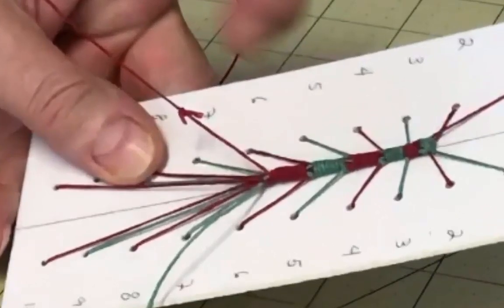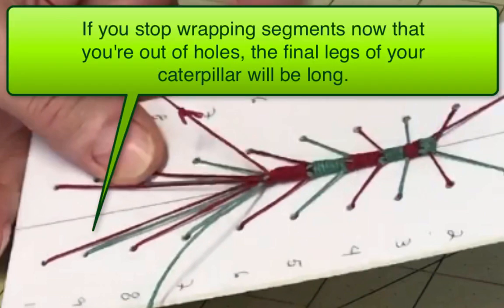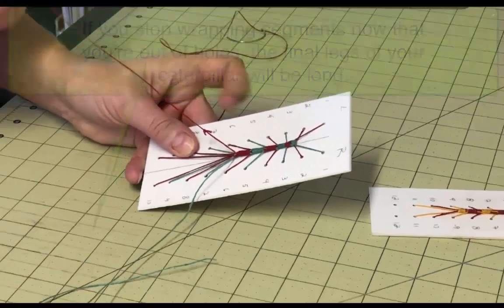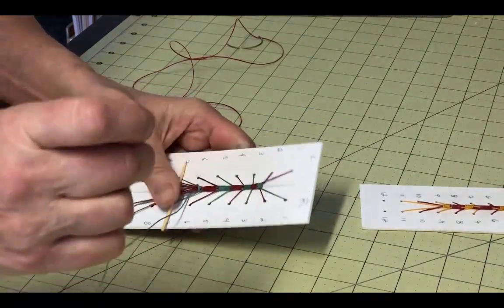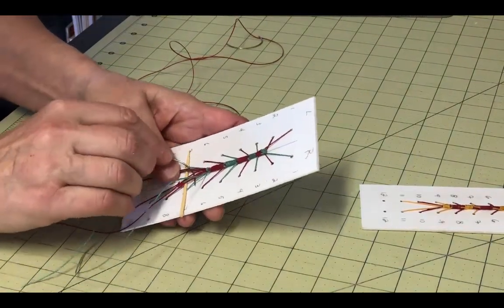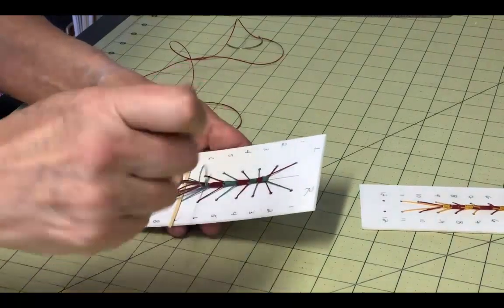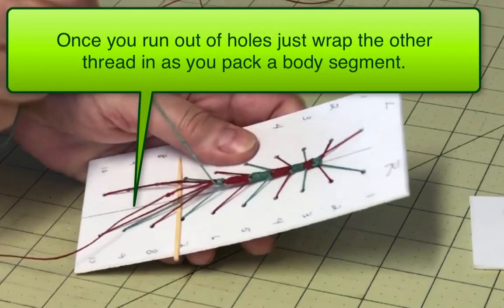Continue wrapping the caterpillar body segments until you run out of holes. Now you need to decide how you want to finish it off. If you stop once you run out of holes, you'll end up with lots of long legs left behind, which is just fine if that's the look you want. If you want shorter legs at the end, then you'll want to wrap a few more body segments. You won't have holes to sew back through, so just let the thread that you aren't using at the moment run down the center of the caterpillar and wrap it up as you are wrapping a segment with the other thread.